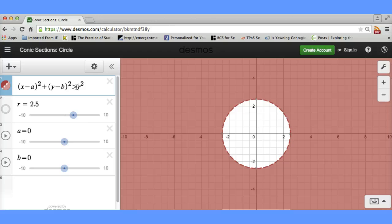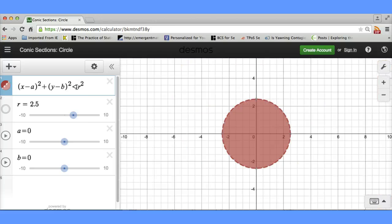Well, there it's shaded outside the circle. Less than shaded inside the circle. And equals just gives us the circle.